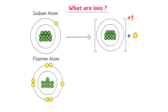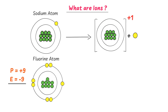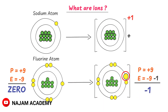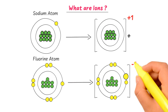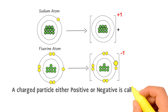Secondly, consider a fluorine atom. There are nine protons and nine electrons in a single atom of fluorine. We know that +9 and -9 cancel out each other and the net charge is zero, so fluorine atom is a neutral particle. Now consider that the fluorine atom gains the electron lost by the sodium atom. Initially there were nine protons and nine electrons, but now one extra electron is gained, so we write -1. Positive 9 and -9 cancel out, giving a net charge of -1 on the fluorine atom. It is now a charged particle.